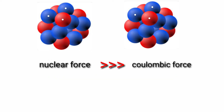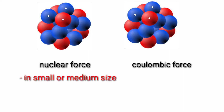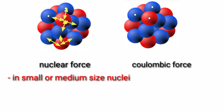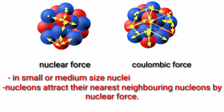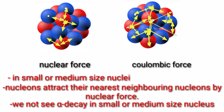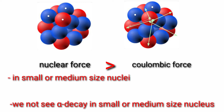In the case of small or medium size nuclei, nucleons attract their nearest neighboring nucleons by the nuclear force. So the nuclear force easily dominates the Coulomb repulsion. Therefore, in medium or small size nuclei, there is no alpha decay, because the nuclear force is much stronger than the Coulomb repulsion.